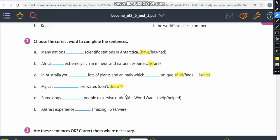Some dogs, some dogs, plural form, but it's present or past. Let's read the rest of the sentence. People to survive during the World War II. During the World War II, an event that happened in the past, so I'm going to use helped. Some dogs helped people to survive during the World War II.